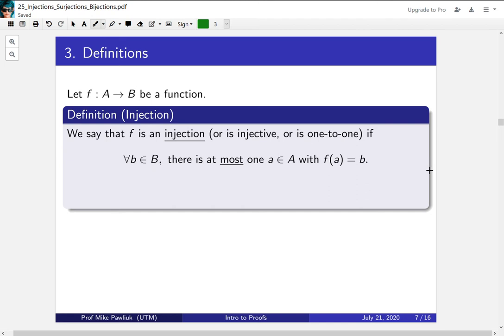The following definition is a version of the horizontal line test. Let f from A to B be a function. We say that f is an injection, or is injective, or is one-to-one, if for every b in the codomain, there is at most one a in the domain where f(a) = b. So for every output, there's at most one input that gives it. This is a formal version of passing the horizontal line test. Everything gets hit at most once.